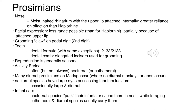Because of that attached upper lip, prosimians have a reduced range of facial expression compared to other primates. The grooming claw is usually on the second digit. Their dental formula is slightly different from Haplorhines because of that dental comb - elongated incisors used for grooming. Reproduction is generally seasonal, and activity is often but not always nocturnal, with many diurnal primates found on Madagascar.